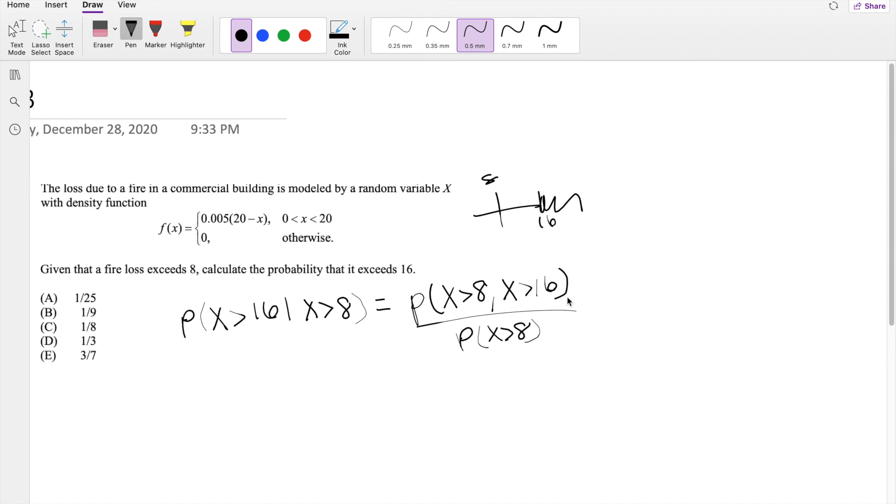So then this is kind of redundant for us to say this twice. So this is essentially the probability that x is greater than 16, divided by the probability that x is greater than 8.